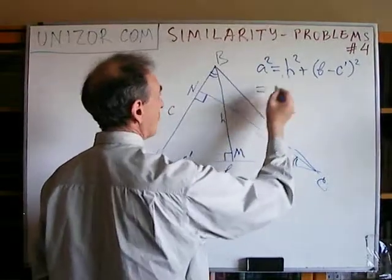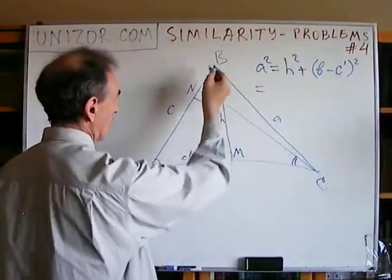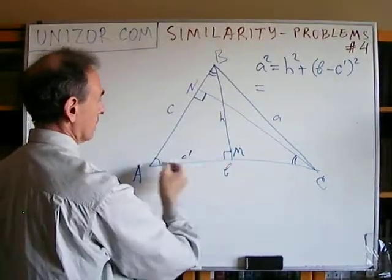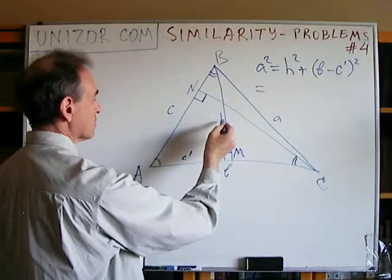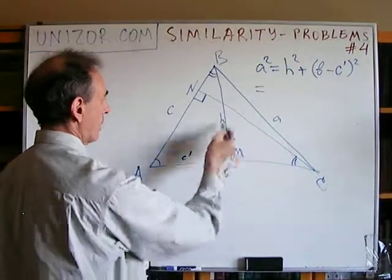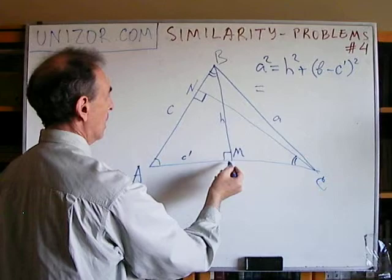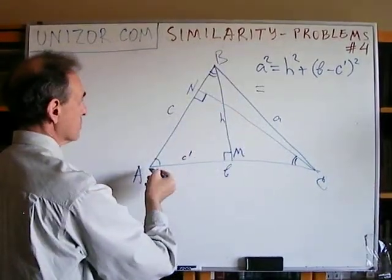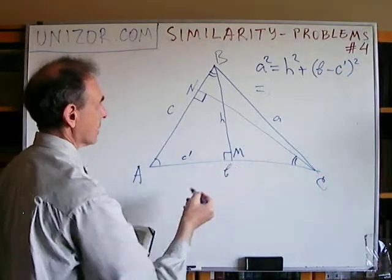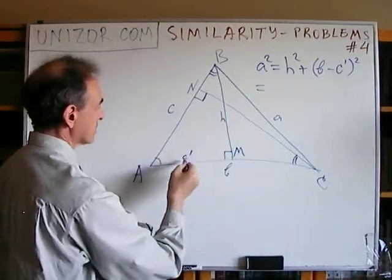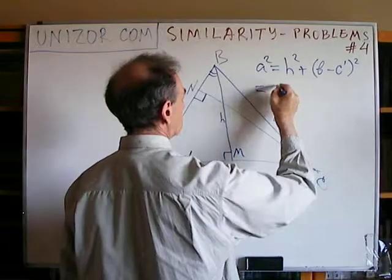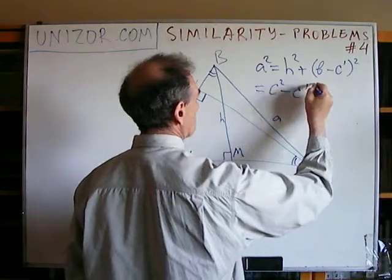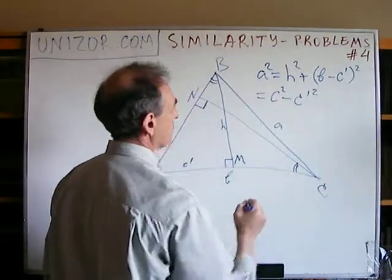Now, what is H squared? Consider right triangle ABM: H squared is the square of catetus BM, which by the Pythagorean theorem equals the square of hypotenuse C minus the square of the other catetus. So H squared equals C squared minus C prime squared. We still have this other term to expand.